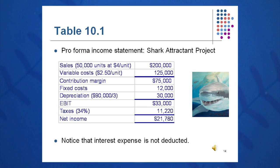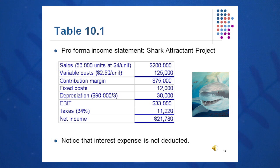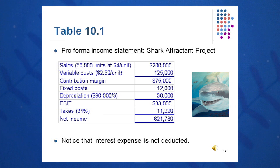Let's do a sample project. Let's say we want to build and start up a shark attractant project, which will cost us $90,000 in investment. We're going to build a small shed and put some equipment in it — property, plant, and equipment — and depreciate it straight line to zero over three years, then close the project down. Picture this project going on for three years, and from that we're going to need to do an income statement, a quick balance sheet and cash flow.